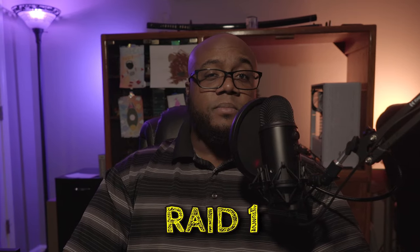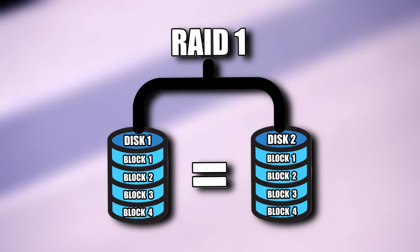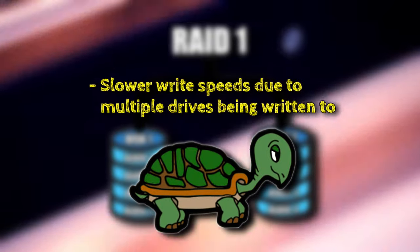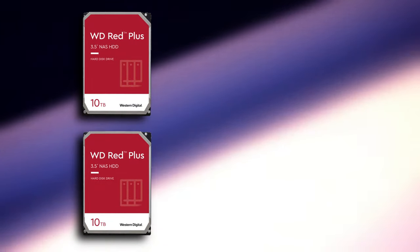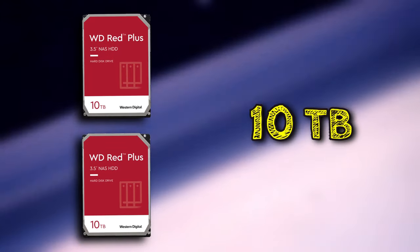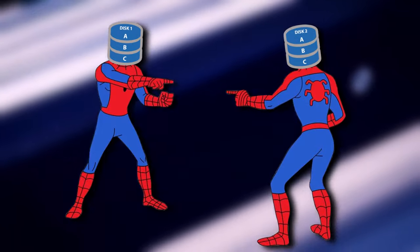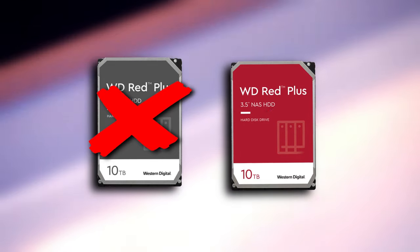Which is why RAID 1 is the go-to, as it provides simple but effective redundancy. In this setup, data is mirrored across two or more drives. Do keep in mind that this does come at the cost of write speeds, as multiple drives are written to simultaneously. In addition, your available capacity is going to be less than the total capacity — if you have two 10 terabyte drives, you'll have 10 terabytes total, as the data written to both will be identical. So in the event of one drive failure, your data will still be intact as long as the other drive isn't compromised.